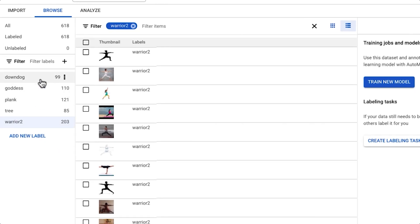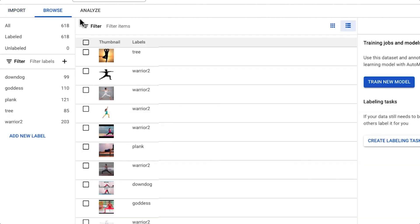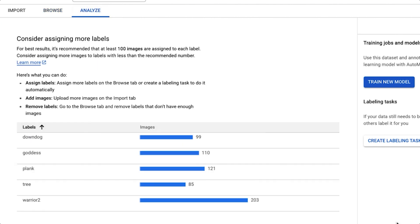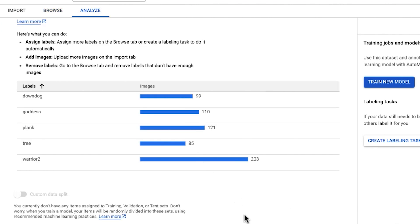As you see here, the images are labeled in five categories. I can even upload unlabeled images and label them. We can analyze our dataset to see that we have enough examples of each category.